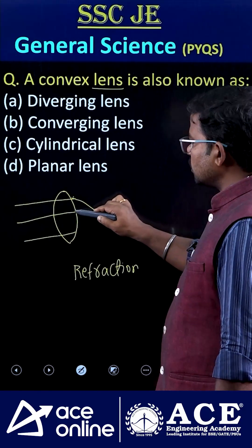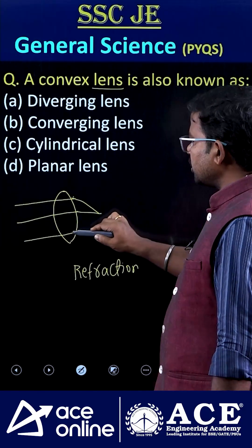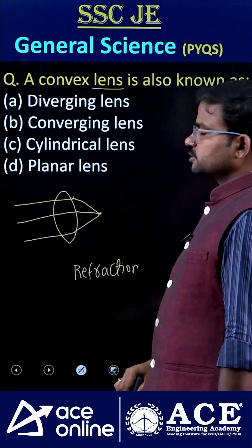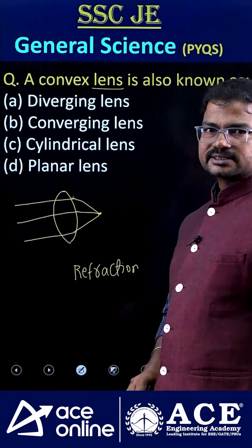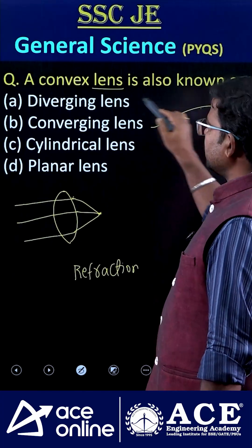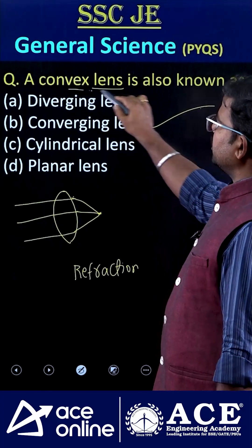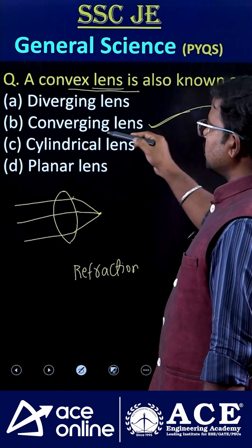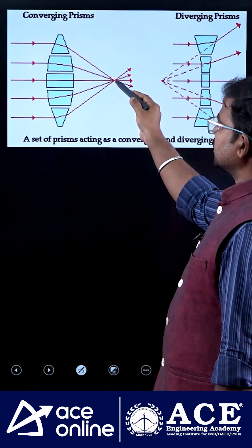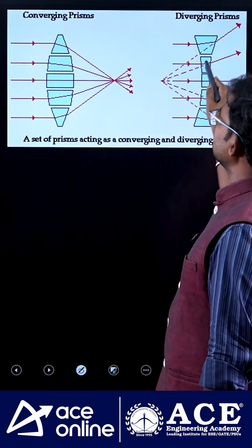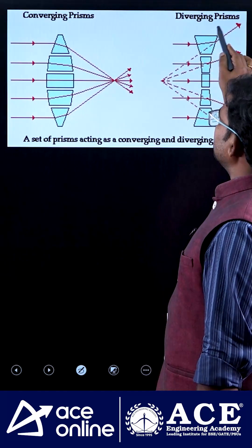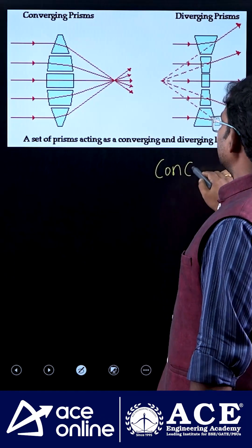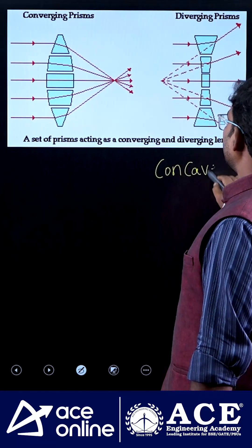Almost all the rays merge at one particular point, which is why this is called converging. That's why convex lenses are also called converging lenses. What about a diverging lens? That is nothing but a concave lens.